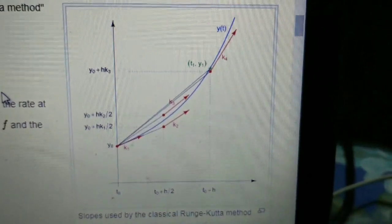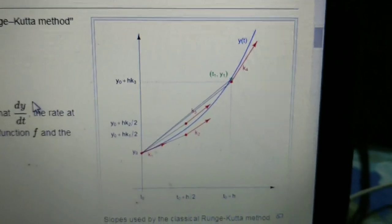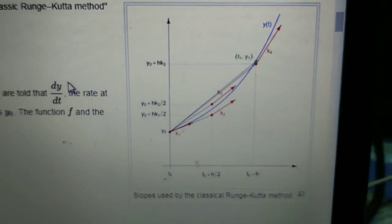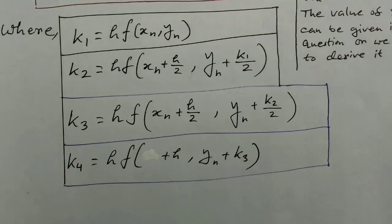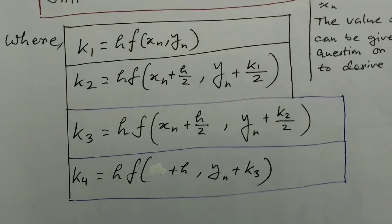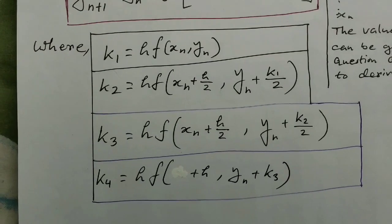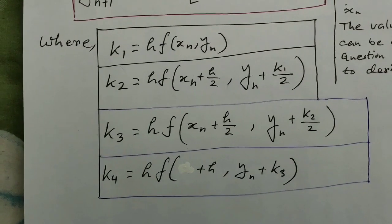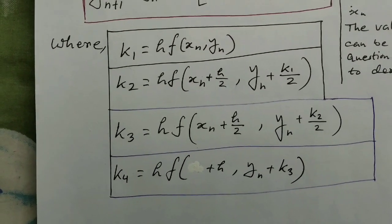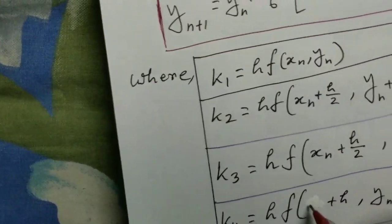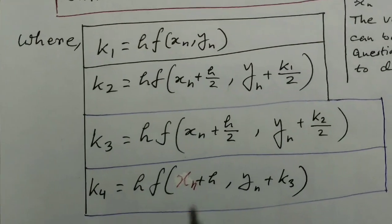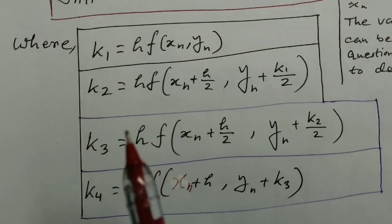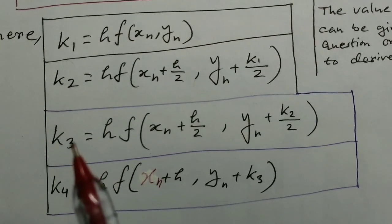We can refer to this graph from Wikipedia to understand k₁, k₂, k₃, and k₄. The calculation formulas are: k₁ = h·f(xₙ, yₙ), k₂ = h·f(xₙ + h/2, yₙ + k₁/2), k₃ = h·f(xₙ + h/2, yₙ + k₂/2), and k₄ = h·f(xₙ + h, yₙ + k₃). Note that k₂ is derived from k₁, k₃ from k₂, and k₄ from k₃.